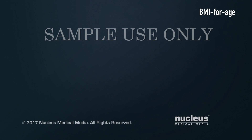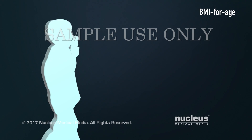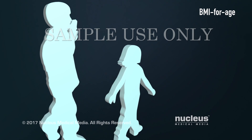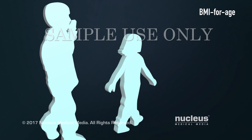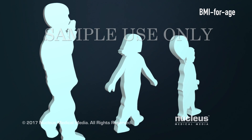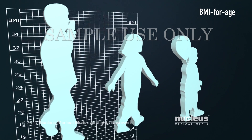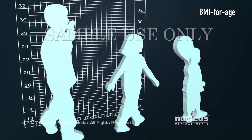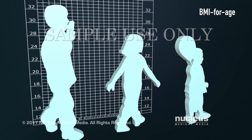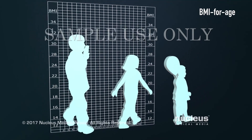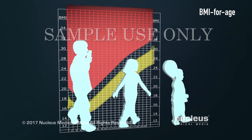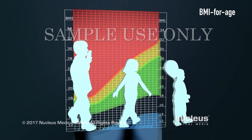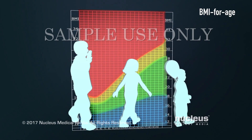BMI for children and teens is called BMI for Age. BMI for Age is calculated the same way as adult BMI, but the child's results are compared with growth charts.